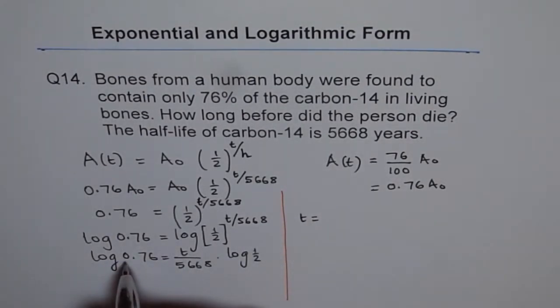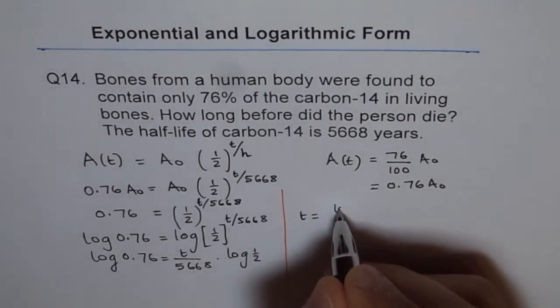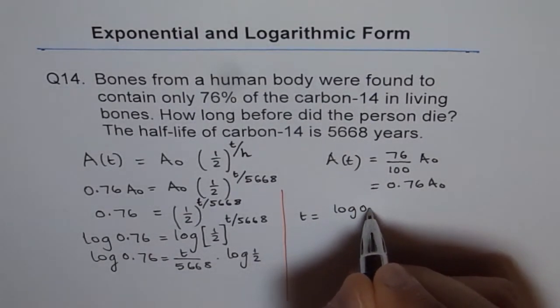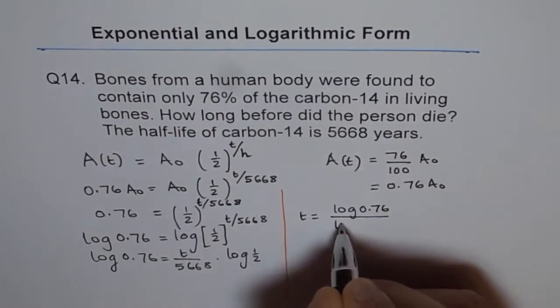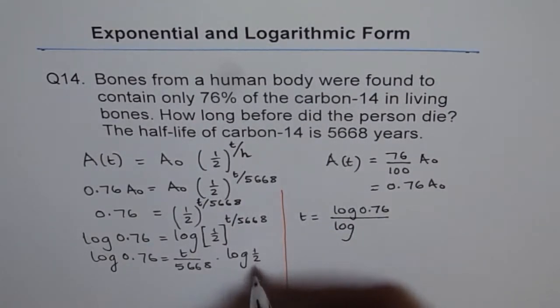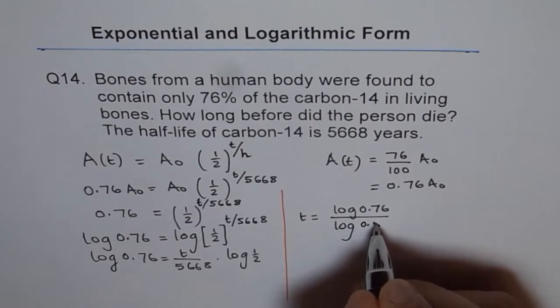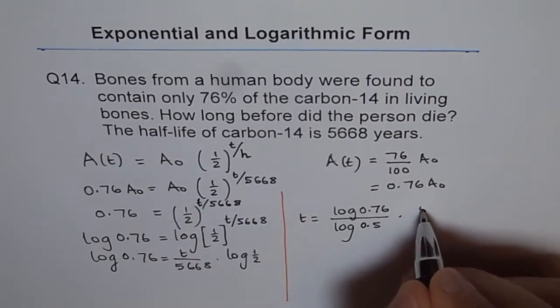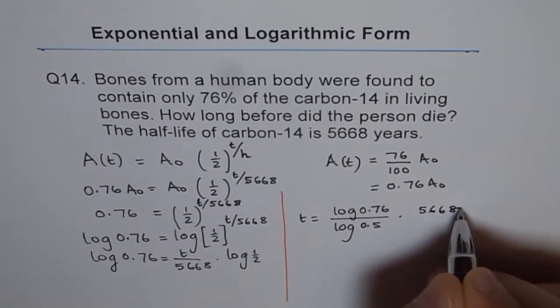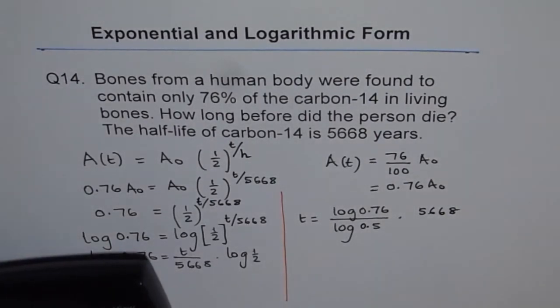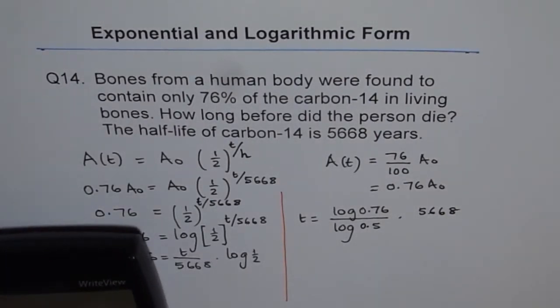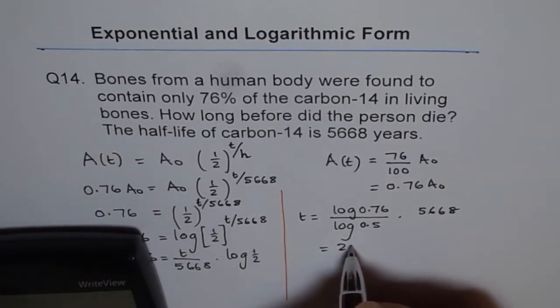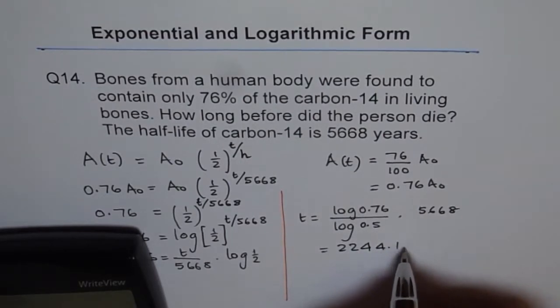We will divide log of 0.76 by log of half and multiply everything by 5668. So, we have log of 0.76 divided by log of 0.5, times 5668, and we can calculate this using calculator. We have log of 0.76 gives us 2244.12.